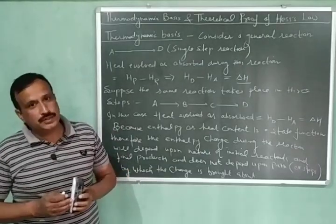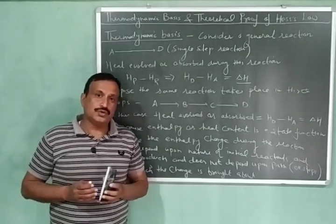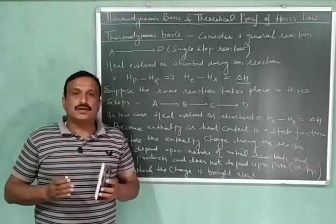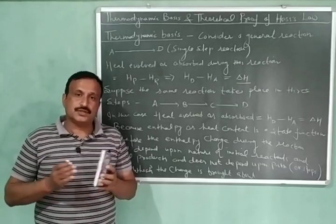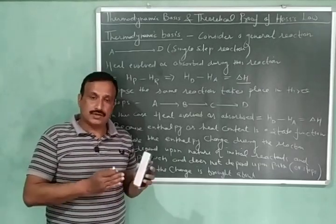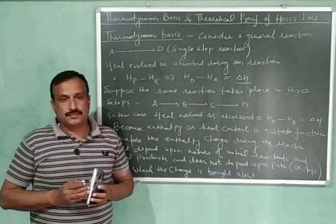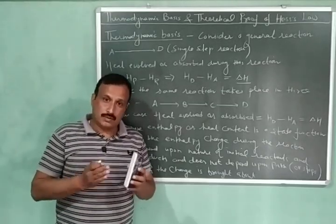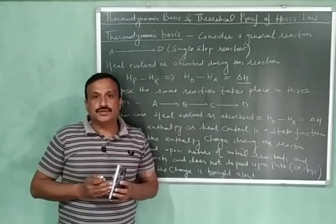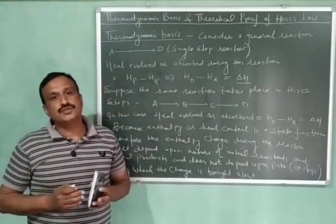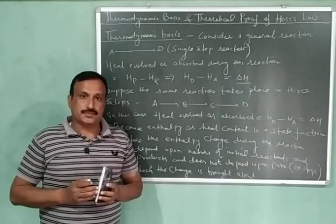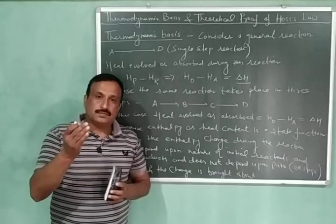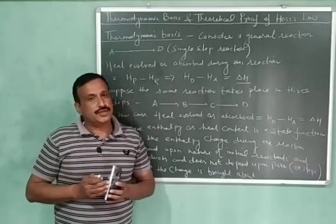In my previous video, we discussed Hess Law. According to this law, the total heat evolved or absorbed during a chemical reaction is the same, whether that reaction occurs in a single step or in a number of steps. In other words, the heat evolved or absorbed depends upon the nature of the initial reactants and the final products, and does not depend upon the path or manner by which the reaction has been brought about.